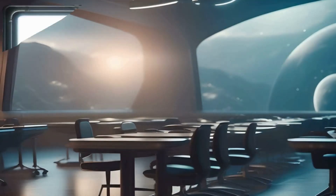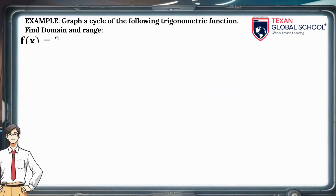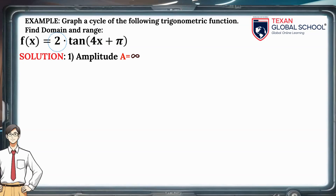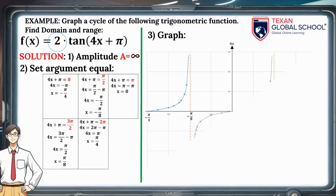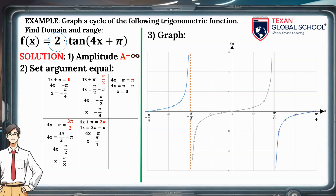In this other example, let's graph a cycle of the following trigonometric function and obtain its domain and range. We can see that the numerical coefficient is 2, but since it is the tangent function, the amplitude tends to infinity. Set the argument 4x + π equal to 0, π/2, π, 3π/2, and 2π. To graph, simply copy the behavior of the tangent function in the values obtained.